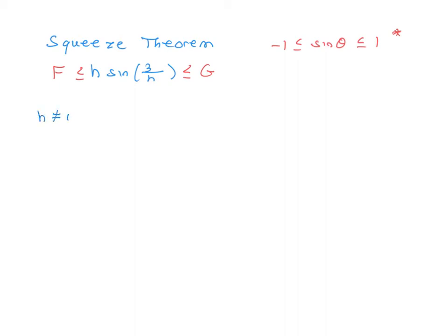As long as h is not equal to 0, sine of 3 over h is trapped between 1 and negative 1. Because of this fact here, it doesn't matter what you put here. Wherever it's defined, this is a true statement.